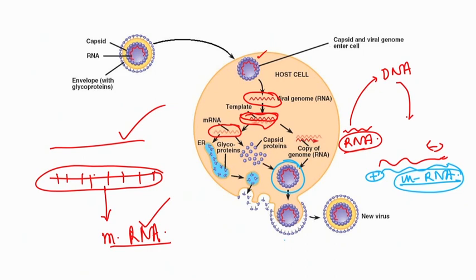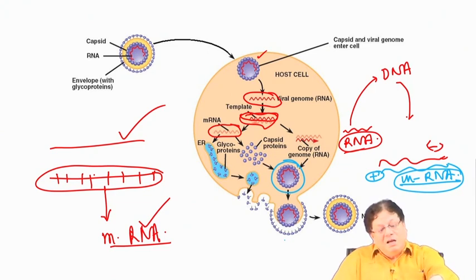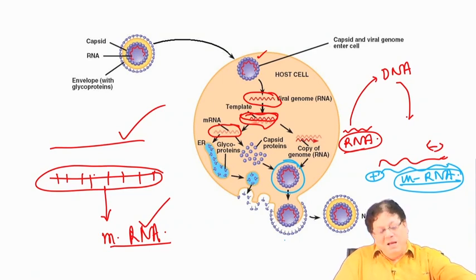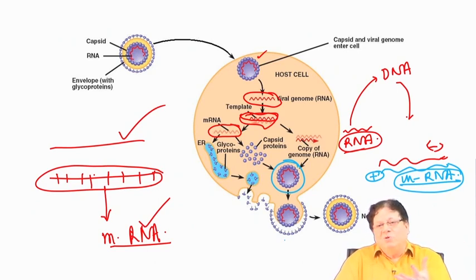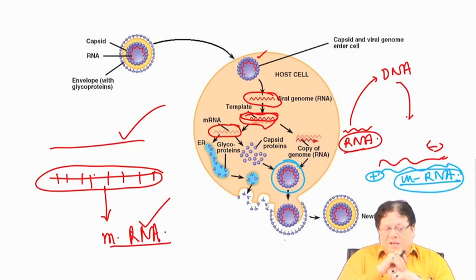If you have a positive strand RNA virus, the process involves a bit more: you first make a negative strand copy of it, and then that negative strand is copied back to get the actual mRNA. Importantly, the RNA virus does not need to go to the nucleus because DNA is not involved anywhere. The entire process takes place in the cytosol — outside the nucleus but within the cell.